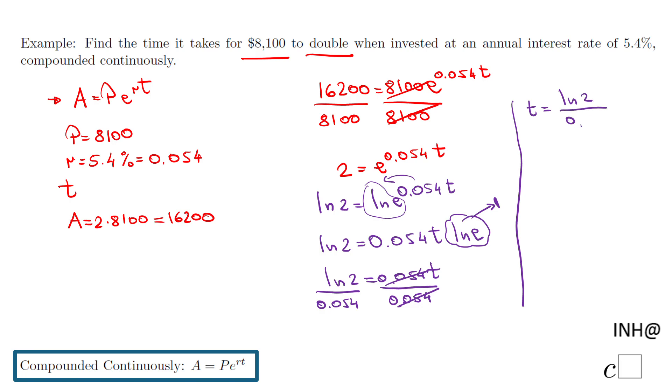It's just about taking a calculator and doing it, and I end up with 12.84. I round it to the nearest hundredth of a year. So that is the time needed to double this amount, $8,100.